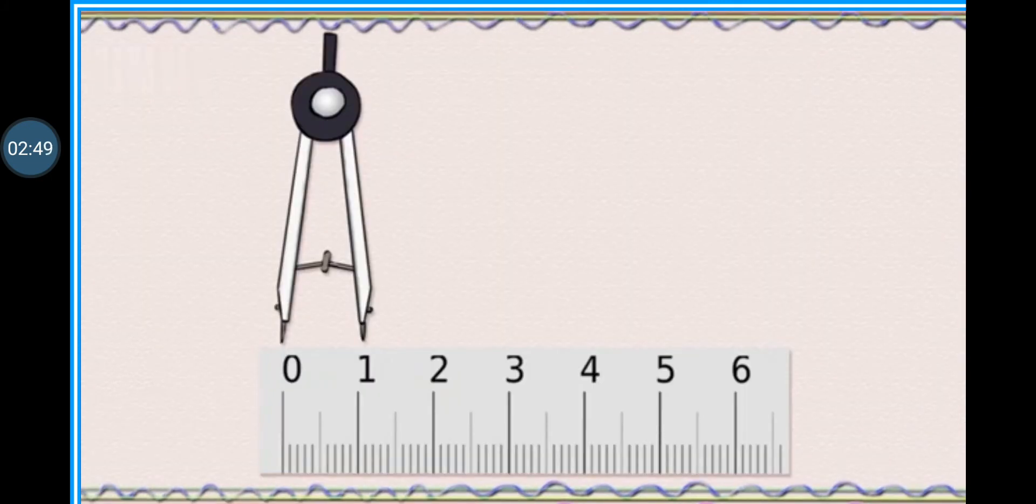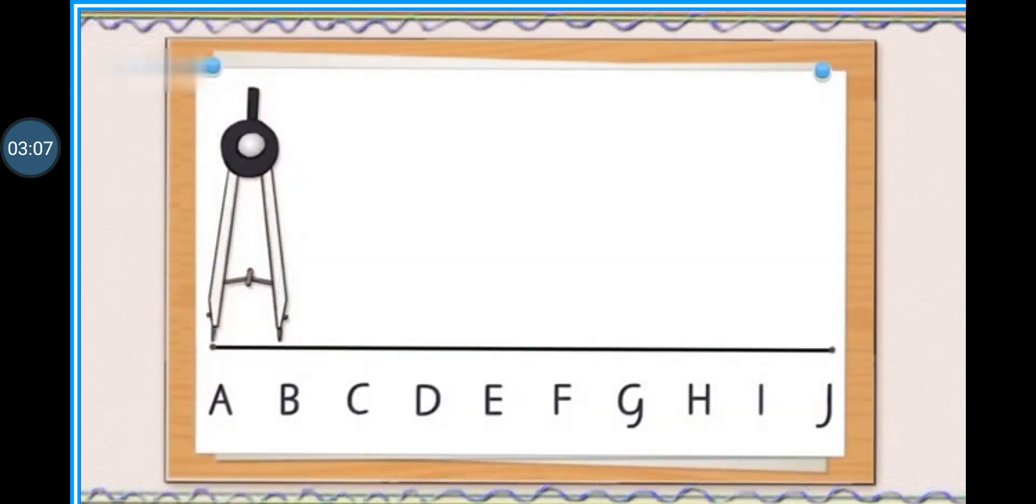To measure a line with the help of divider we open the divider up to 1 centimeter or any reasonable length. You know why we are taking the small number to measure it? Just to minimize the margin of error in the measurement.